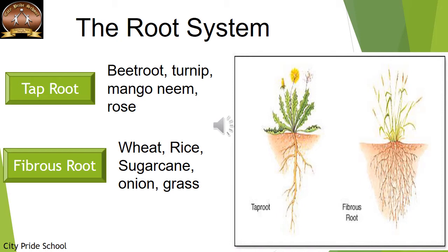There is another root system called the fibrous root system. Here, the main primary root that had developed degenerates. From the base of the stem there are many branching roots arising, so there is no primary root structure in the center. We only have branch roots arising from the base of the stem — from one point. This is termed as the fibrous root system.